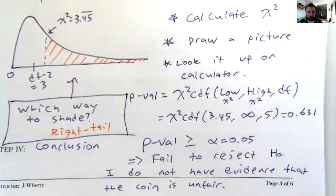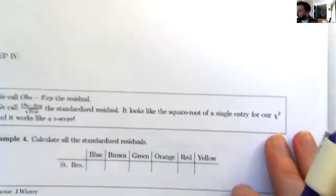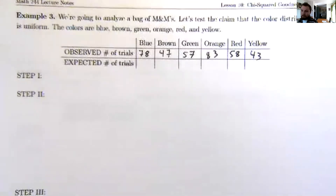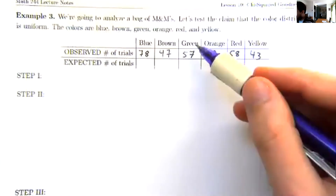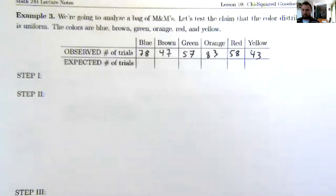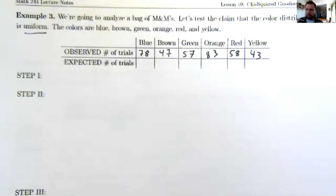Now let's do another problem from start to finish. I went to Fred Meyer and got a medium sharing-size bag of M&Ms—I ate them all myself. I got 78 blue, 47 brown, 57 green, 83 orange, 58 red, and 43 yellow. The question is: do each of these colors show up uniformly—that is, do they all show up the same amount of time? Let's test this.